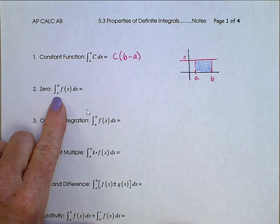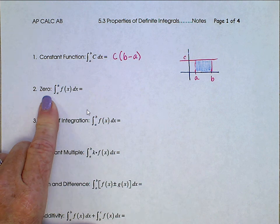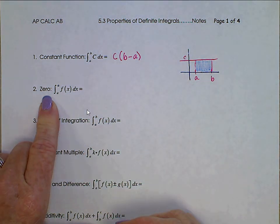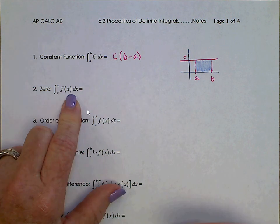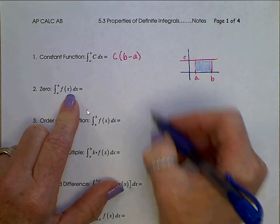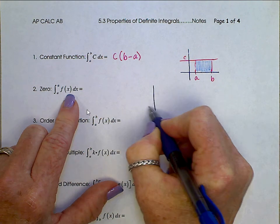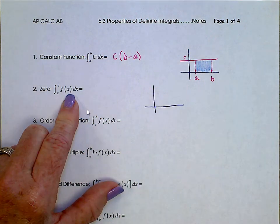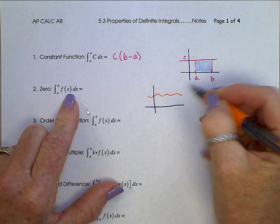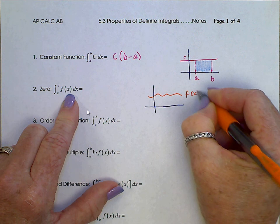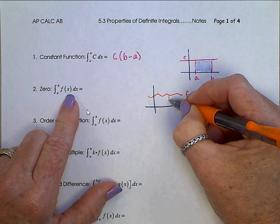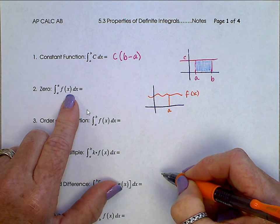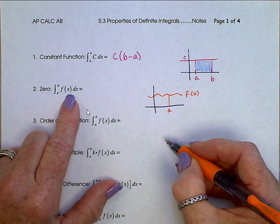Okay, this next one is the property called zero. That should give you a hint to the answer here, but if we look at this, this is the integral from A to A of f(x) dx. If we take a look at a graph, some function here, f(x),